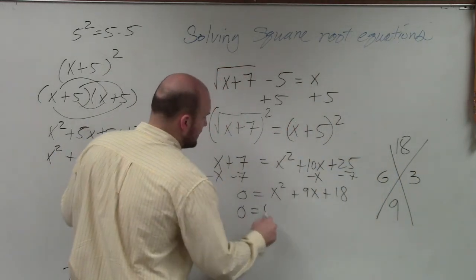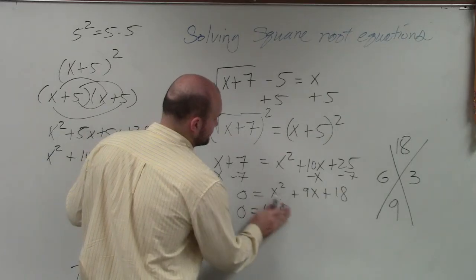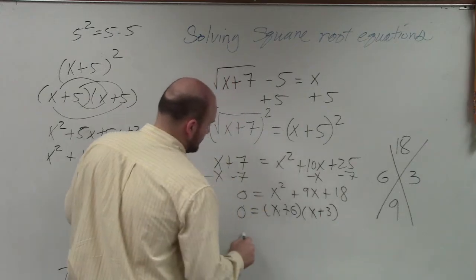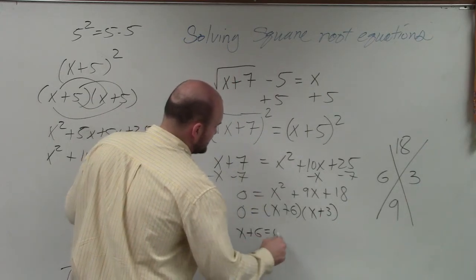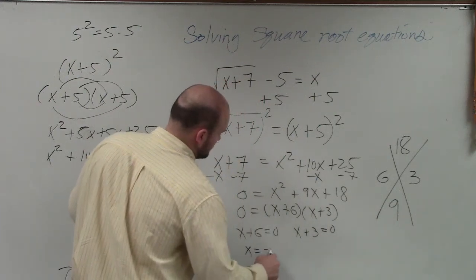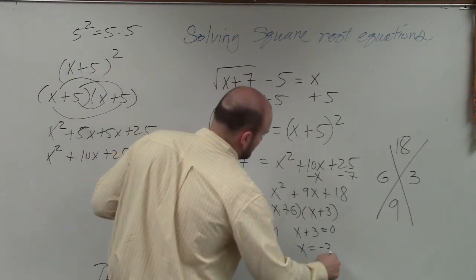So now, x plus 6, x plus 3. x plus 6 equals 0, x plus 3 equals 0.